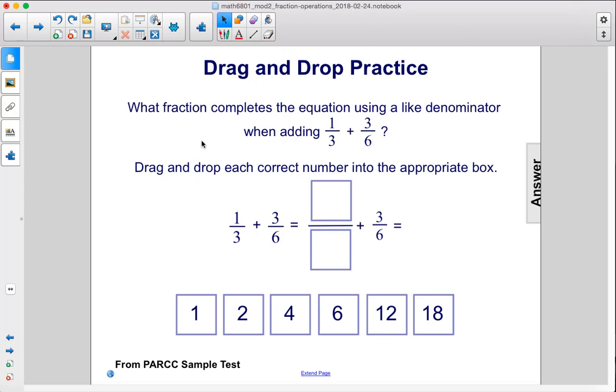What fraction completes the equation using a like denominator when adding 1/3 + 3/6? Drag and drop each correct number into the appropriate box. All right, so we have a common denominator here of 6. So in order to turn 1/3 into a fraction with a denominator of 6, which we can drag this here, what would the numerator have to be?